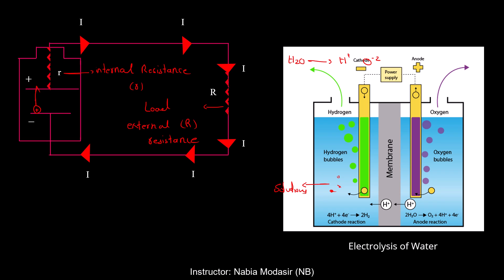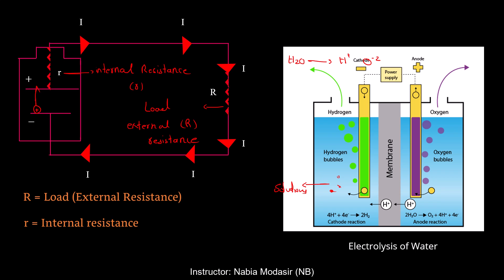The charges experience resistance inside the battery because there are other atoms inside the battery besides the positive and negative charges. The charges collide with those atoms and lose some of their energy, which is called resistance. Since it is inside the battery, we call it internal resistance, denoted by r. The resistance which is connected to the circuit and is outside the battery is called the load, or external resistance, and we denote it by capital R.